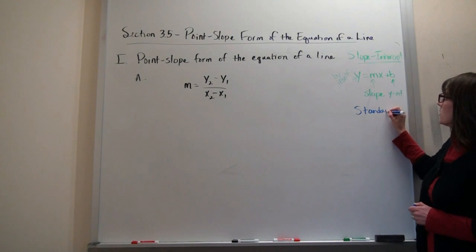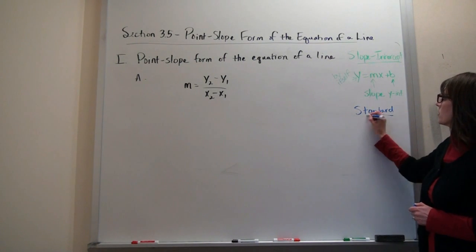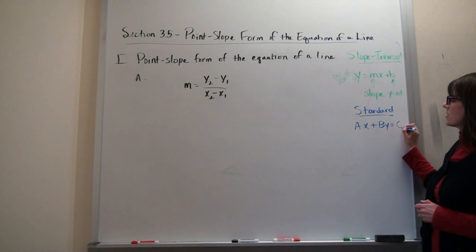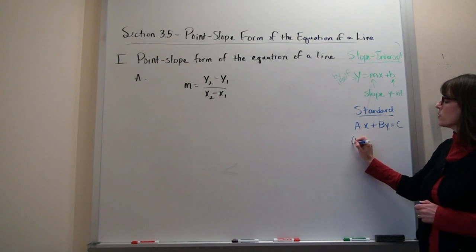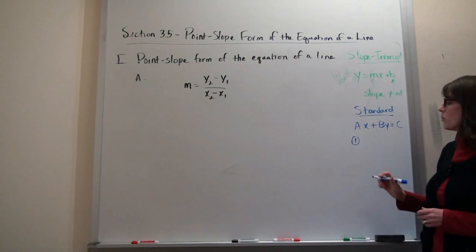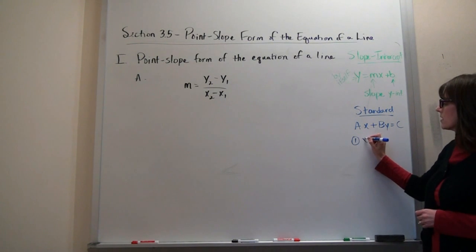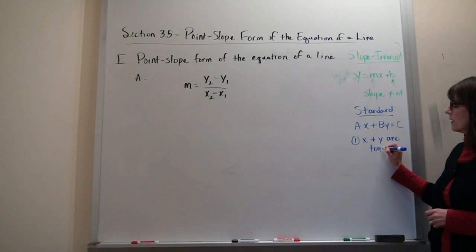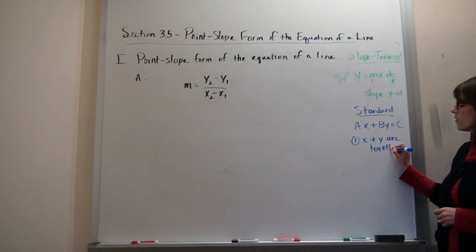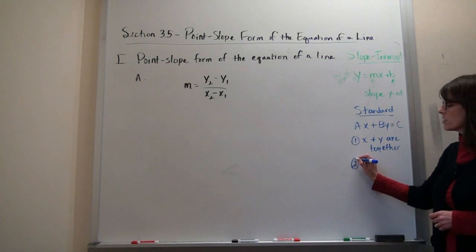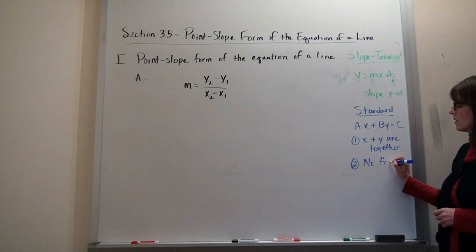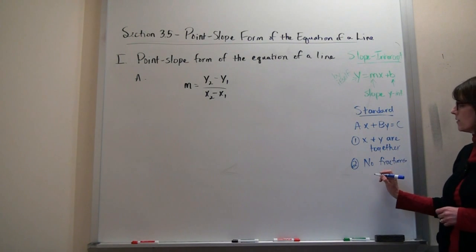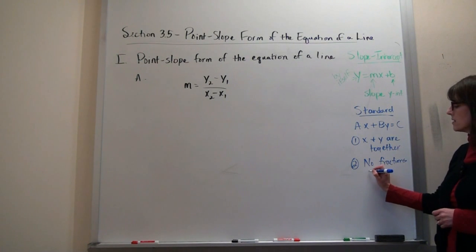We also have standard form, which looks like ax plus by equals c. There were two criteria for being in standard form: one is that the x and the y are together, and the other is that you have no fractions and no decimals. When you have both of those criteria met, then you are in standard form.